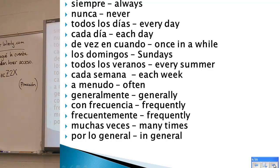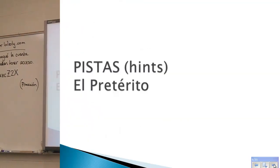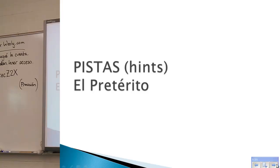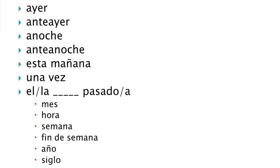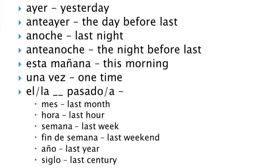Just like for the imperfect, we also have some help words — pistas — to help you recognize when it's going to be preterite. Words like ayer (yesterday), anteayer (day before yesterday), anoche (last night), the night before last, esta mañana (this morning) — these are specific moments in time and will be clues that it's going to be a preterite conjugation.